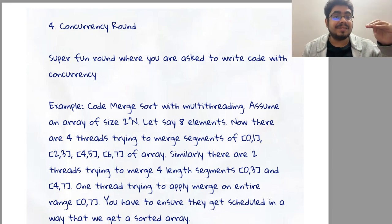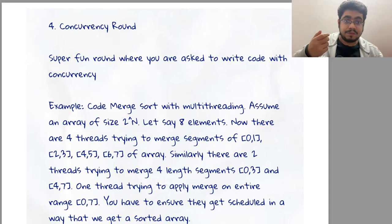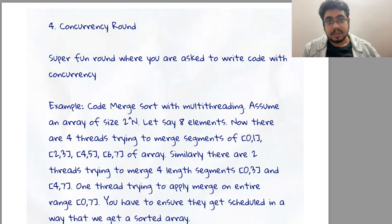One small optimization that you can do is that if 2 2-length sub-arrays of the initial part are done, you can allow scheduling of the next 4-length which comprises of these 2 2-length sub-arrays. So writing all this concurrent code and making sure that synchronization is achieved amongst them is what is desired in such a coding interview round.